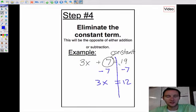Step four is eliminate the constant term. This will either be done by adding or subtracting, whatever the opposite of what you have is. Right here we have a plus 7, so we're going to minus 7 from both sides.